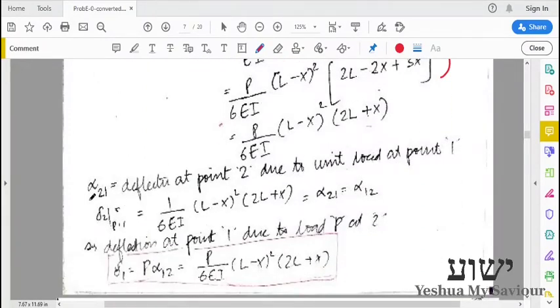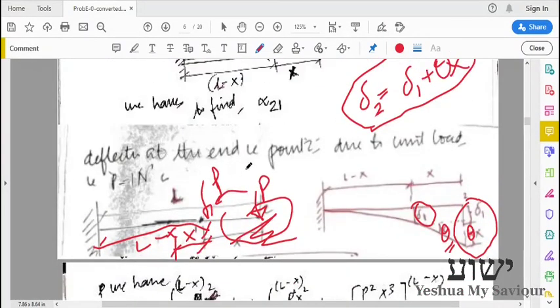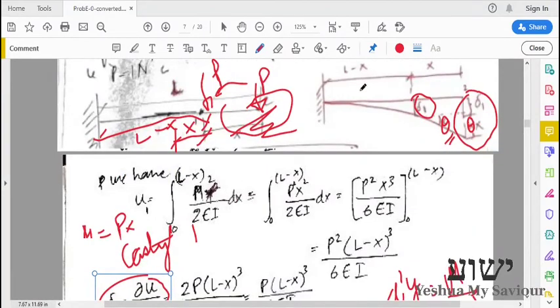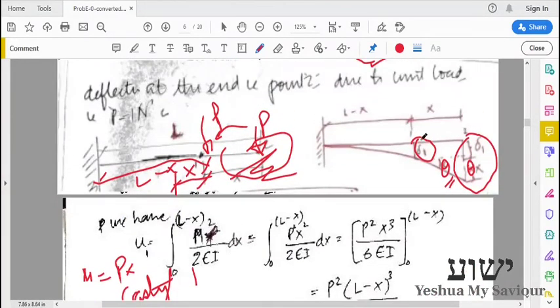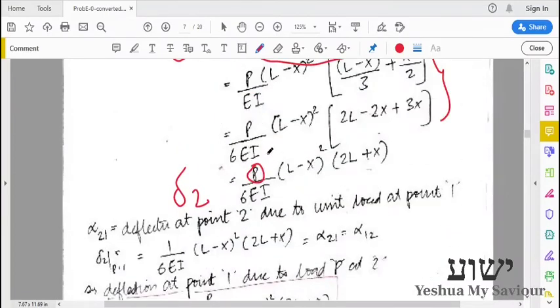Please note this integration function and I am just grouping the terms. So this is delta 2 due to a load p at point 1. Deflection of point 2 due to load at point 1. So if I apply a unit load, we will have 1 here. And that will be the influence number alpha 2,1, that is deflection at point 2 due to the application of a unit load at point 1.